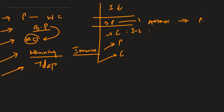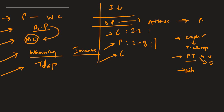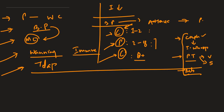The catarrhal phase lasts 1–2 weeks with mild rhinorrhea, mild cough, and malaise. The paroxysmal phase lasts 2–8 weeks and features bouts of severe coughing, an inspiratory whoop, post-tussive vomiting, post-tussive syncope, and even rib fractures. The convalescent phase begins after 8 weeks, with symptoms gradually decreasing as the patient returns to baseline.